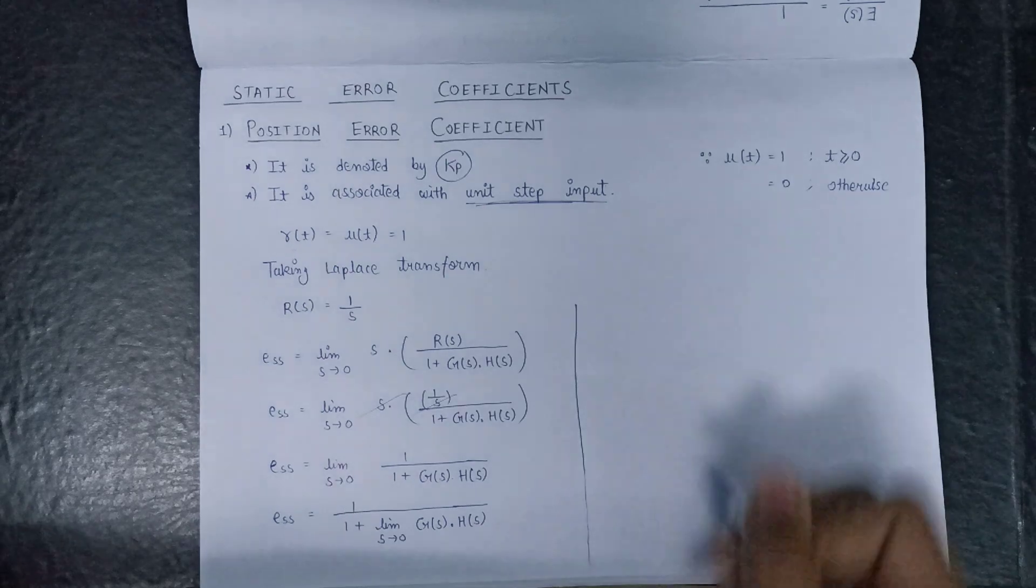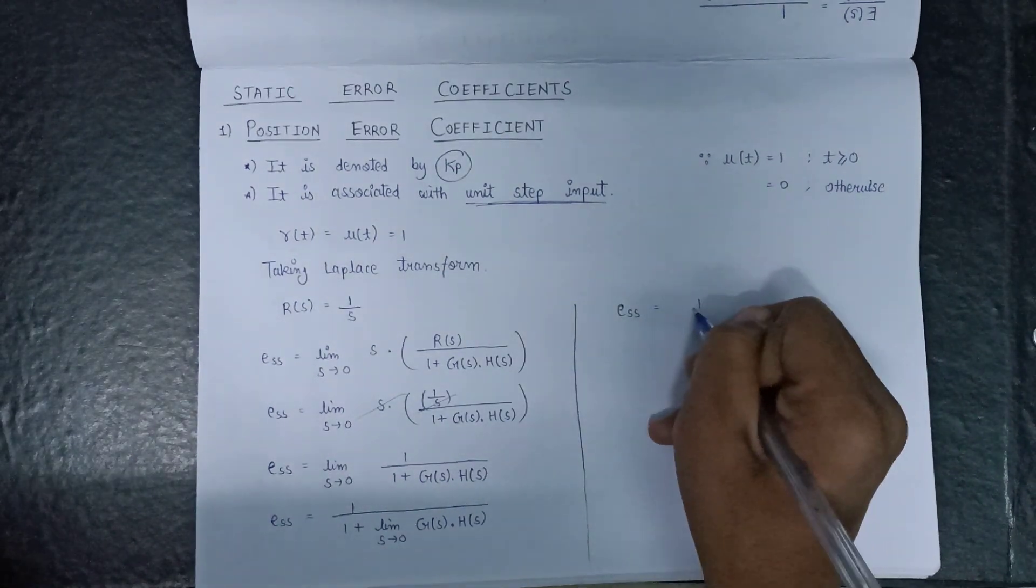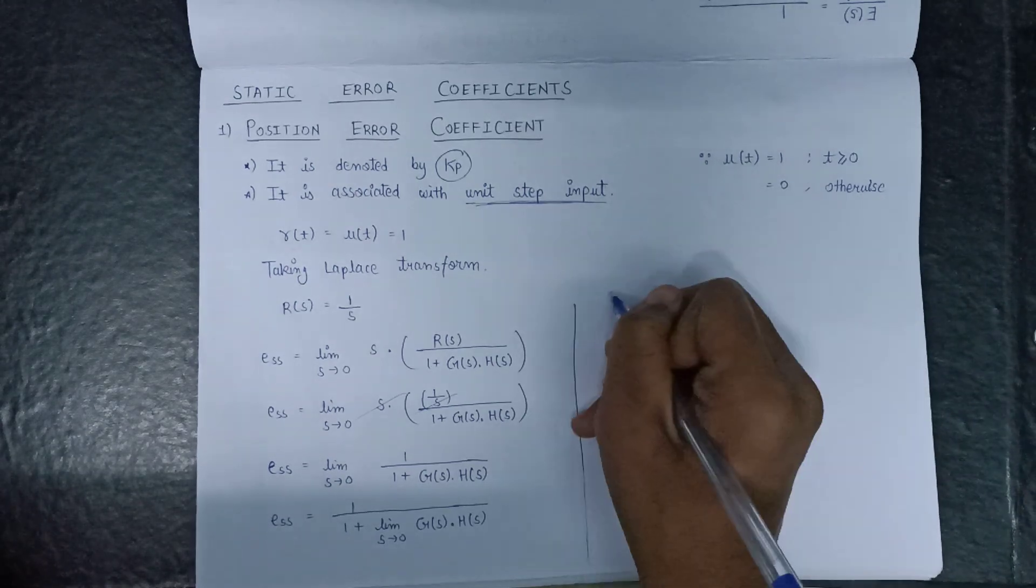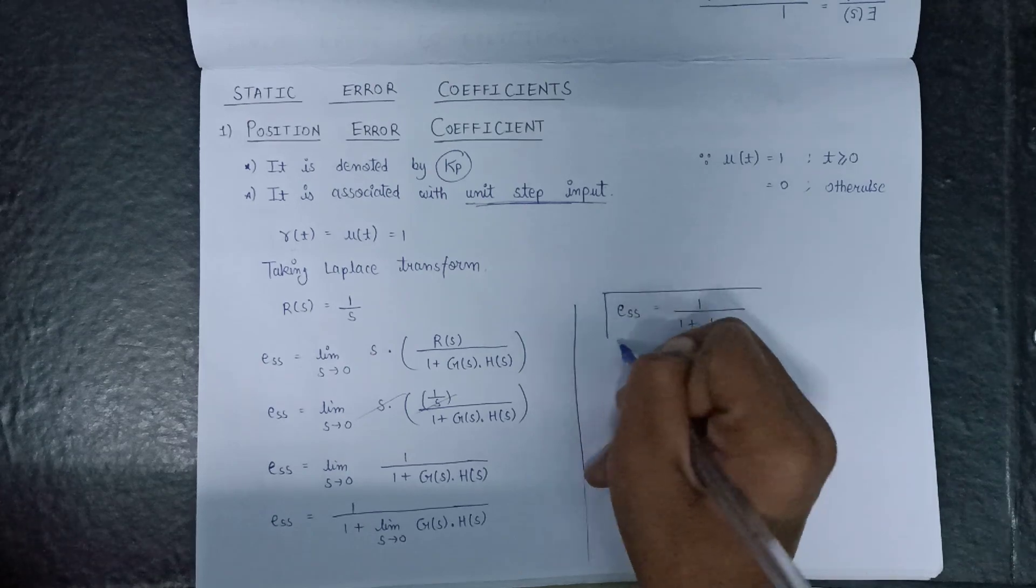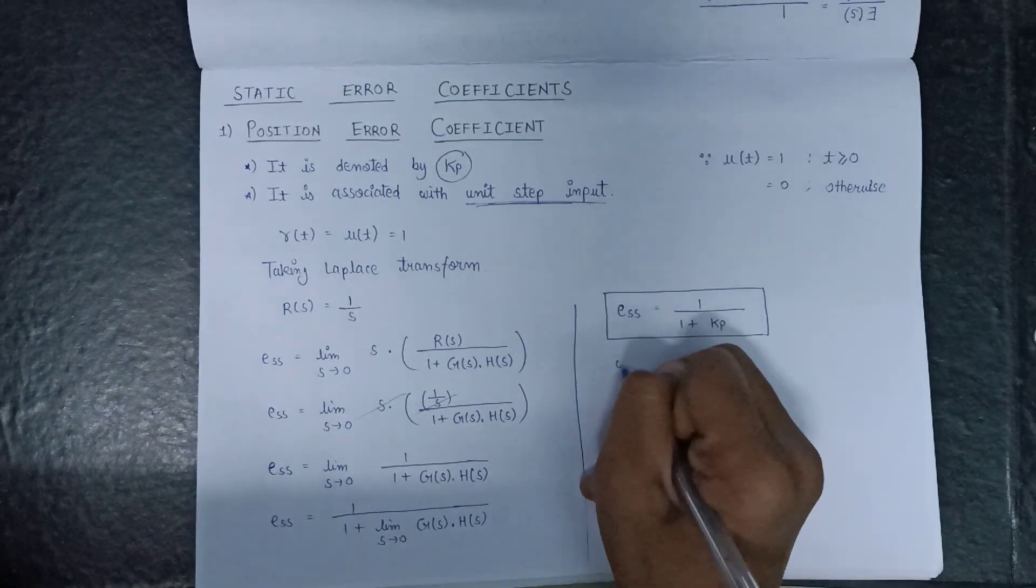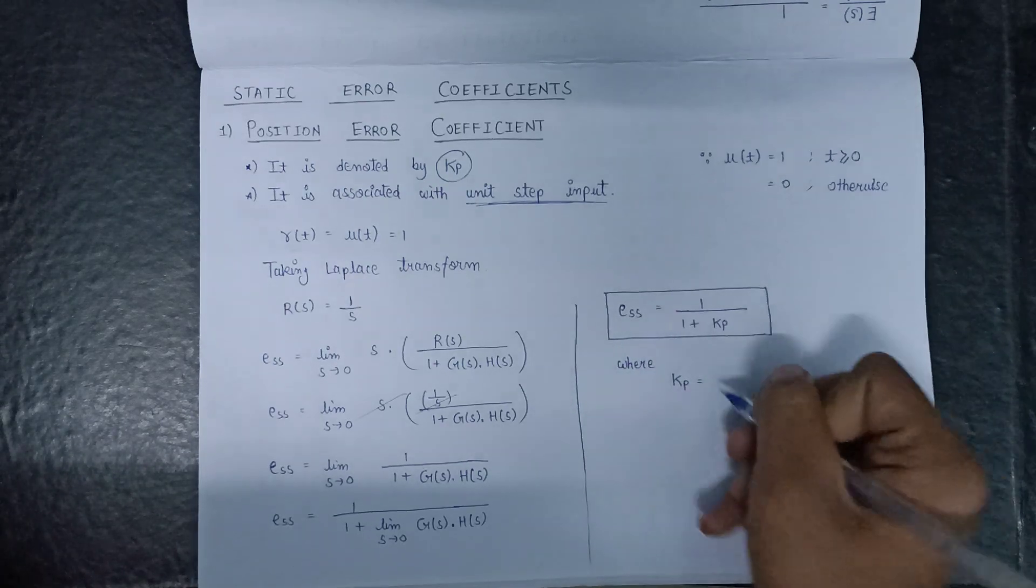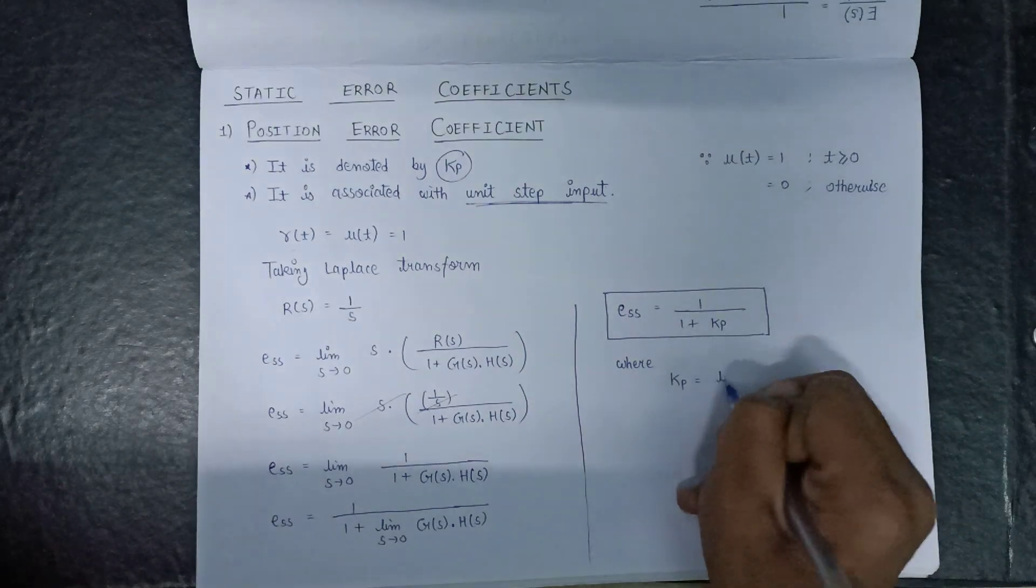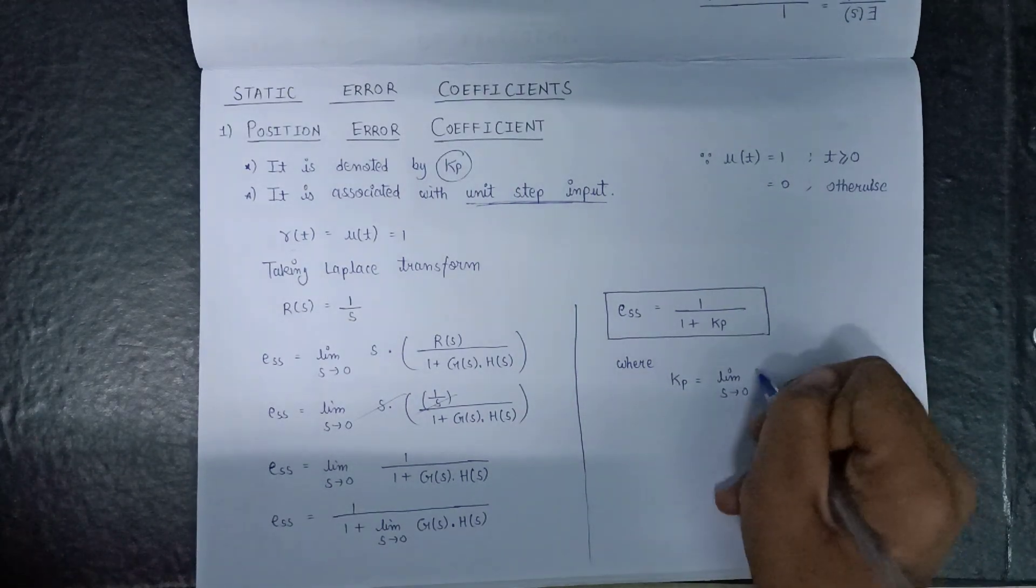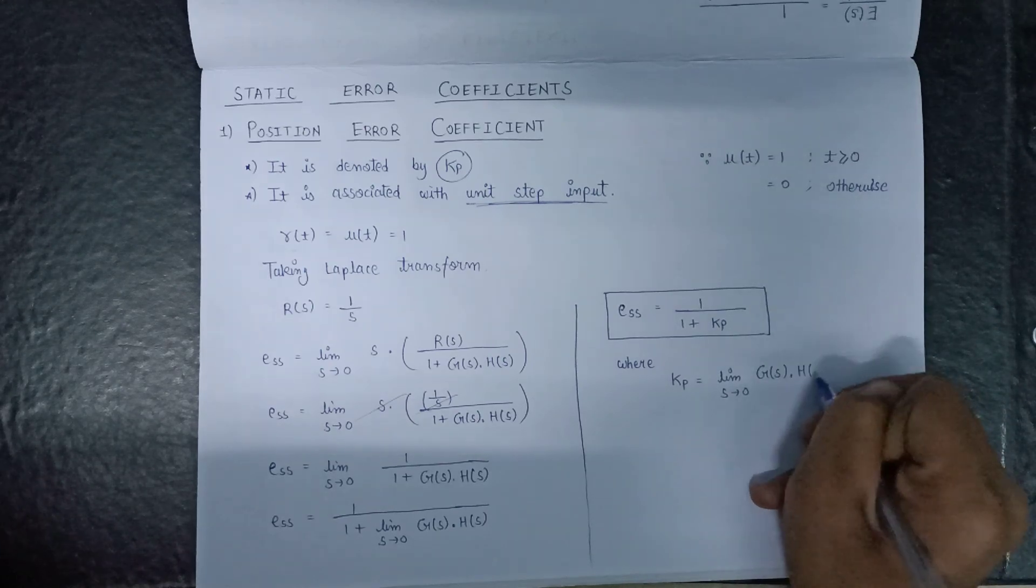So E(s) is also equal to 1 over 1 plus Kp, where Kp is equal to limit s tends to 0 G(s) into H(s).